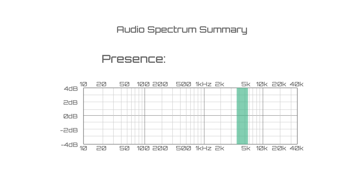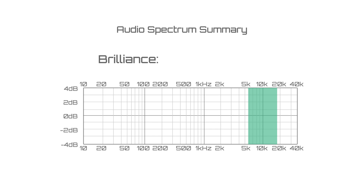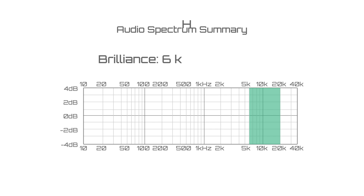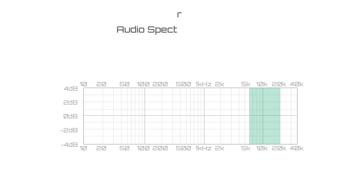Presence range is responsible for clarity and definition of a sound and is often the area at which most home stereos centre their treble control on. The Brilliance range is composed entirely of harmonics and is responsible for the sparkle and air of a sound in the mix.